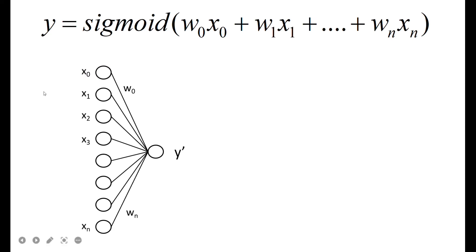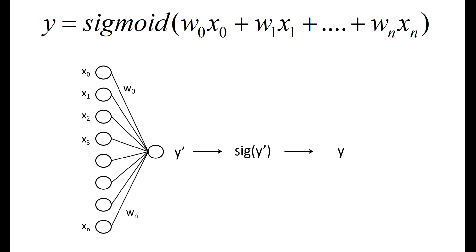This is very similar to what we saw last time. We have a neural network with weights w0, w1 up to wn, and inputs x0, x1, x2 up to xn. In this one-layer neural network you multiply to get y-dash. In logistic regression you just add one more step — you take the sigmoid of y-dash to get y. The reason for framing it as a neural network is so we can use PyTorch with it.